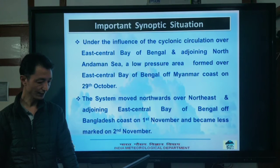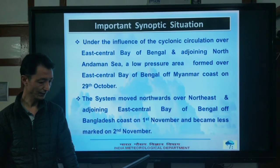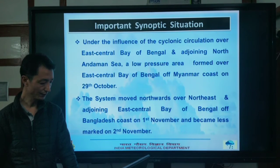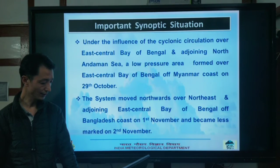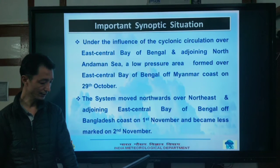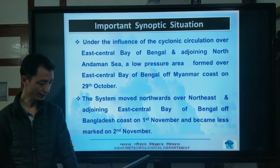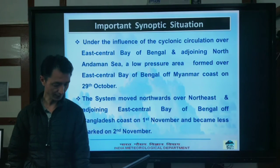Under the influence of a cyclonic circulation over East Central Bay of Bengal and adjoining North Myanmar coast, a low pressure area formed over East Central Bay of Bengal off the Myanmar coast on 29th October. The system moved northwards over northeast and adjoining East Central Bay of Bengal off the Bangladesh coast on 1st November and became less marked on 2nd November.